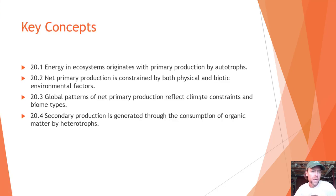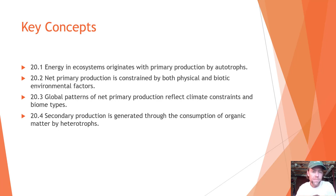The key concepts we're going to cover are: that energy in an ecosystem originates with primary production by autotrophs; that net primary production is constrained by both physical and biotic environmental factors; that global patterns of net primary production reflect climate constraints and biome types; and that secondary production is generated through the consumption of organic matter by heterotrophs.